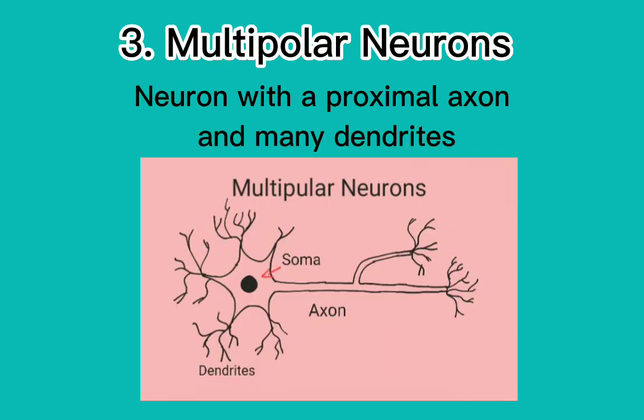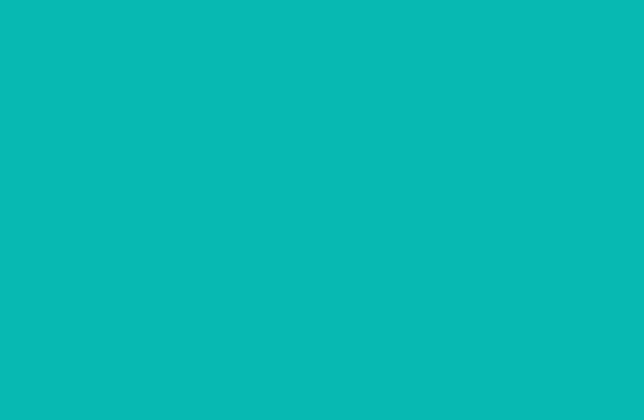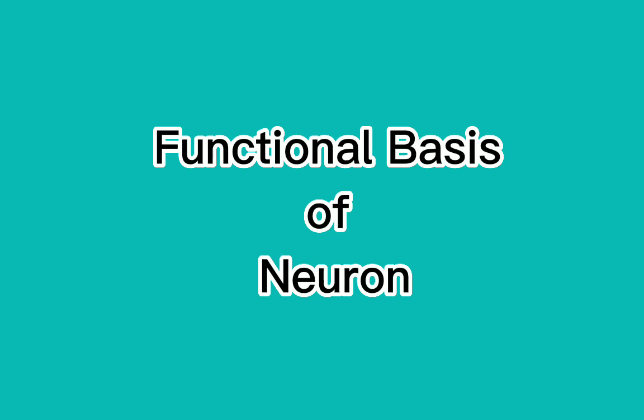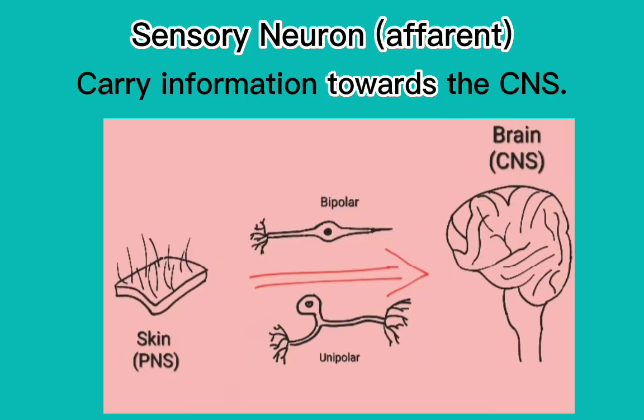3. Multipolar neurons — a neuron with a proximal axon and many dendrites. Functional basis of neurons: Sensory neurons (afferent) carry information towards the CNS.